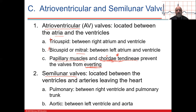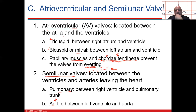The semilunar outflow valves — pulmonary and aortic — have no chordae tendineae. The aortic valve is especially important because it operates under high pressure. The smooth muscle walls of the aorta and arteries are very thick, putting a lot of pressure against the heart. The left ventricle has to work against that pressure in the systemic circuit.